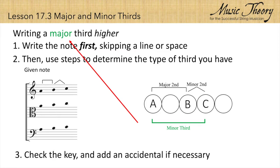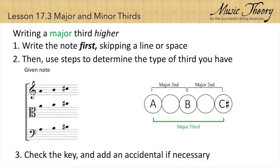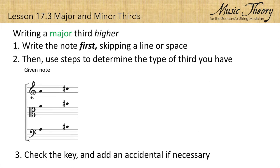It's always important to check the key and add an accidental if necessary. In this case, we need to add a sharp to the C to raise it a half step. Now we have two major seconds that make a major third. So the note that is a major third above A is C sharp.